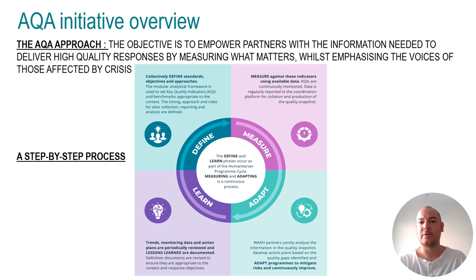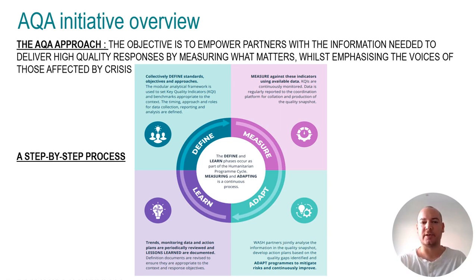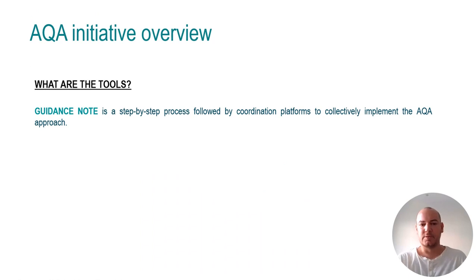The methodology and calculation methods are also defined during this step. The second step is Measure, where implementing partners collect data and key quality indicators are continuously monitored, leading to the production of quality snapshots. The third step is Adapt, where corrective actions are collectively identified to improve the impact of the response. And the fourth step is Learn, where trends and action plans are reviewed, lessons learned are documented, and definition documents and tools are revised to ensure they are appropriate to the context and response objectives.